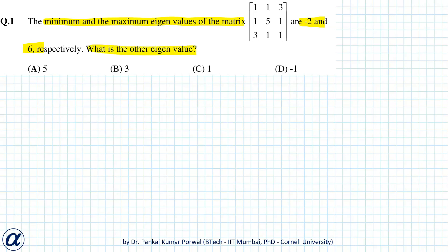So this other eigenvalue should be greater than or equal to minus 2 and less than or equal to 6, because minus 2 and 6 are the minimum and maximum eigenvalues. And again we will solve this question using properties of eigenvalues.